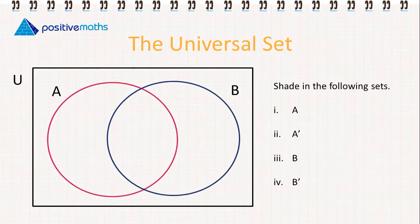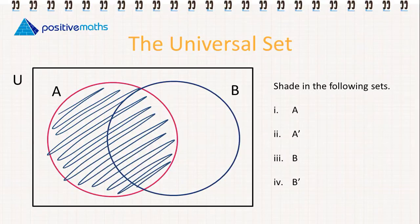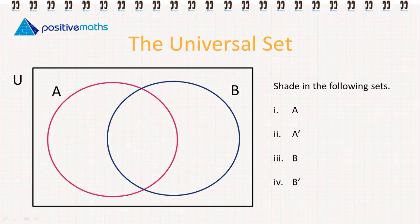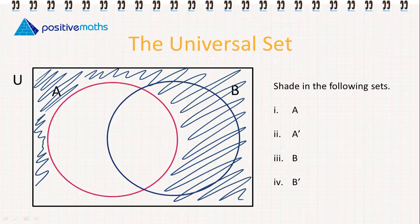Let's work on shading in some of the following sets. The first one we're asked to shade in is the set A, so it's everything inside the circle for A. Then we're asked to shade in the complement of A. So it's everything that's in the universal set but that's not in A, so it will include some of the elements of B. That's the complement of A.